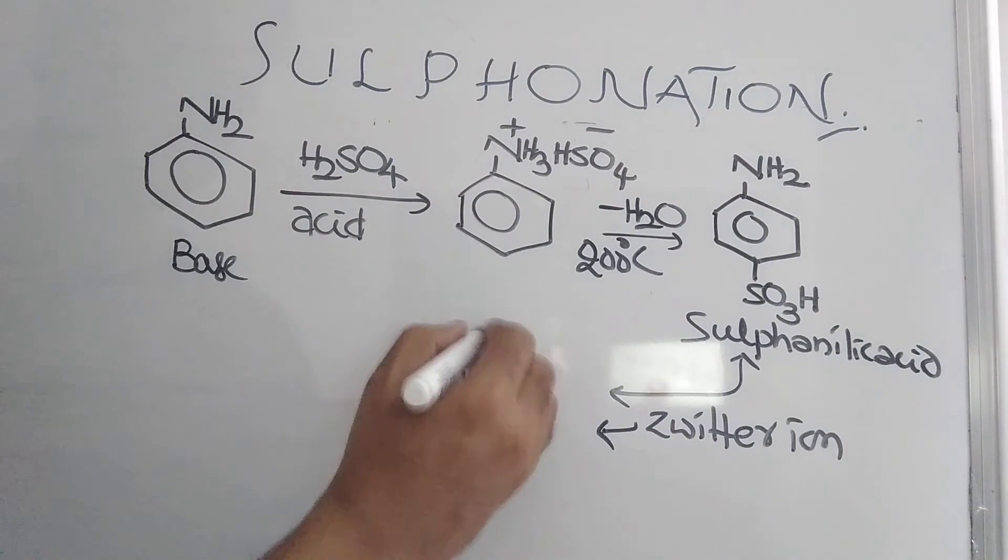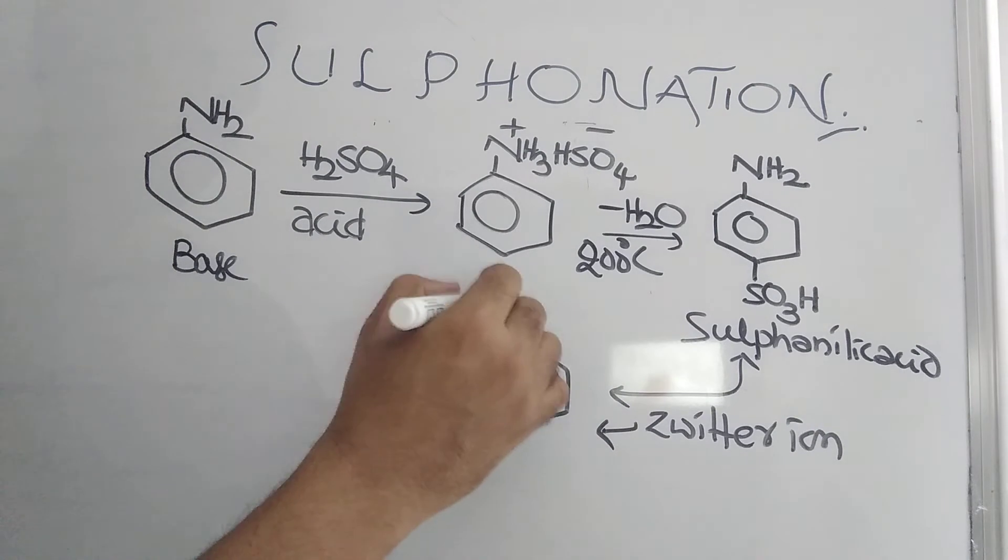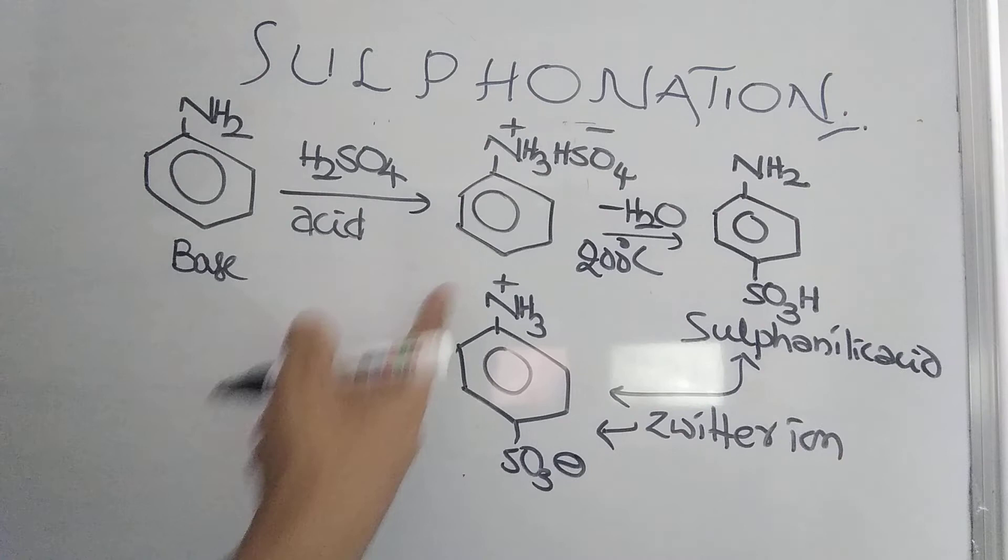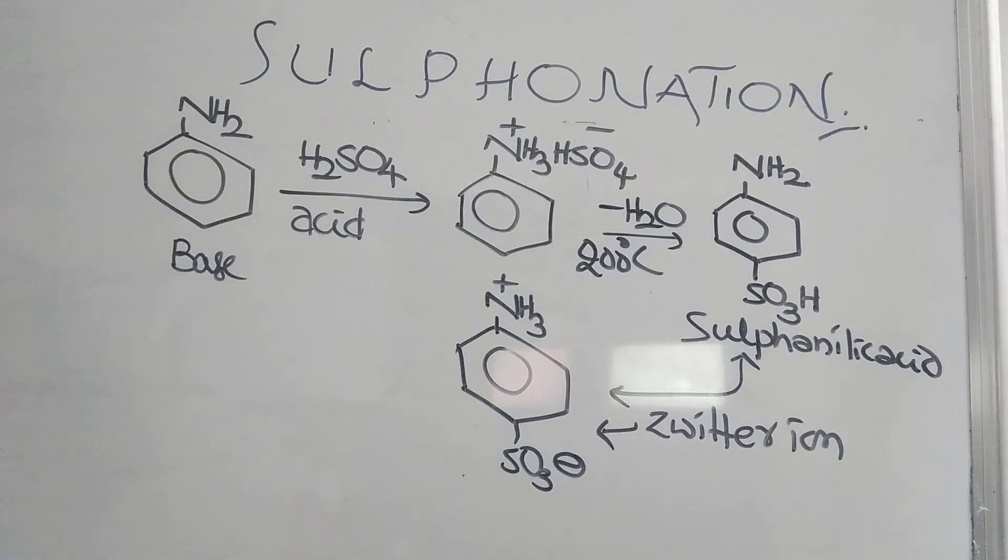What I am writing here, you see. It is not changed. It will become NH3+ and this will become SO3-. SO3H now. That hydrogen is shifted here. So, it is getting plus charge. It is getting minus charge. This is called zwitterion.